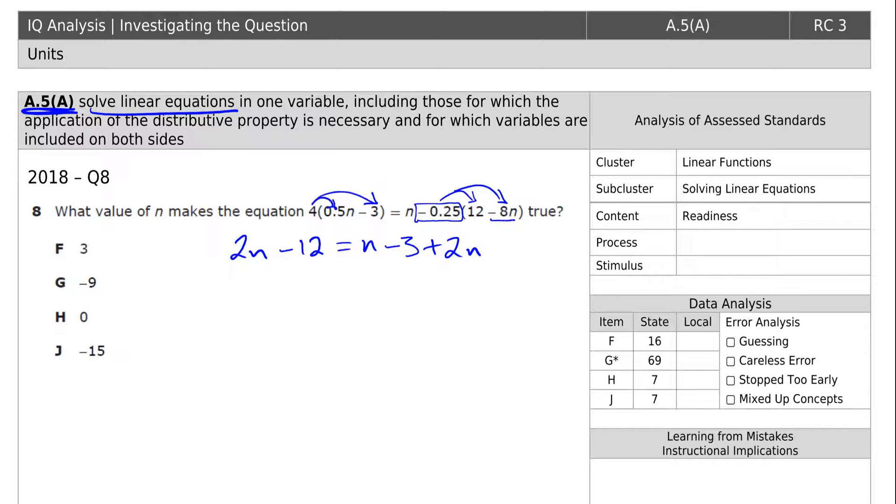We have n's throughout this problem. We need to combine like terms first. These two n's are on the same side. It's a positive n plus 2n, so that would give us 3n. There's an invisible 1 in front of that. And the minus 3 is still there, 2n minus 12.